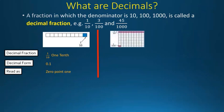As you can see here, we have 100 cubes or 100 blocks that come together to form 10 lines which make 100. If we take 1 out of the whole 100 then we get 1/100. So the decimal fraction is 1/100, the decimal form is 0.01, and we read it as zero point zero one.